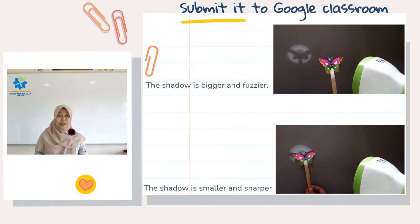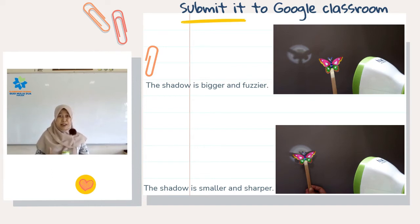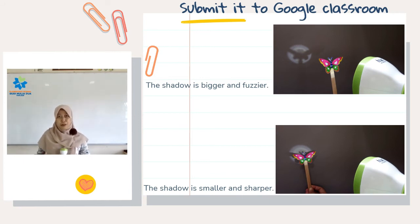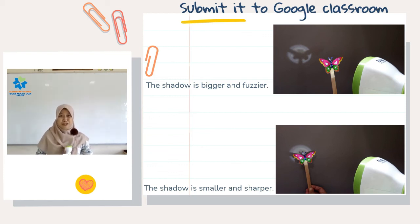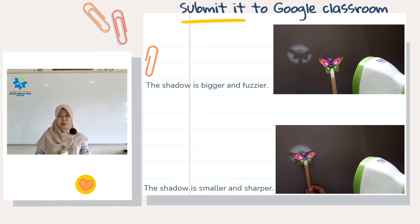So, there are two activities today: making a puppet, and after that, making your puppet shadow bigger and smaller. Don't forget to take a photo of your bigger and smaller shadow and send them to Google Classroom. Thank you for your attention. See you next time. Wassalamualaikum warahmatullahi wabarakatuh.